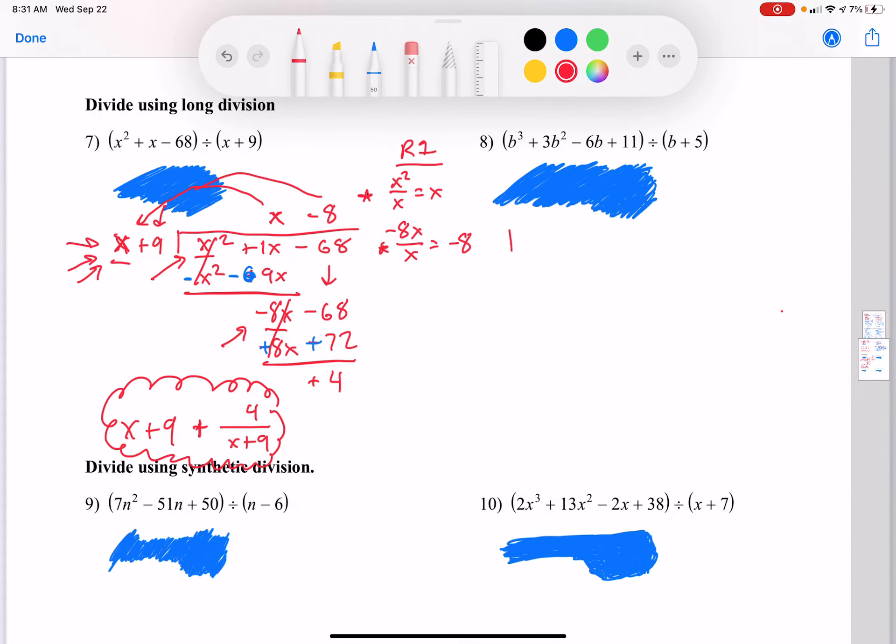Next, we're going to do b plus 5 into b cubed plus 3b squared minus 6b plus 11. So round one, we're going to start off with b cubed into b, or actually b into b cubed, which is b squared. You cancel a b. B squared goes on top. Do your rainbow multiplication. B squared times b is b cubed, b squared times 5 is 5b squared. So change the signs.